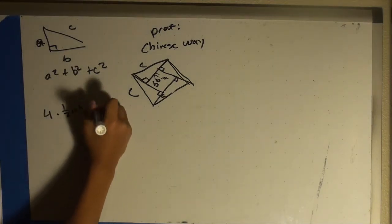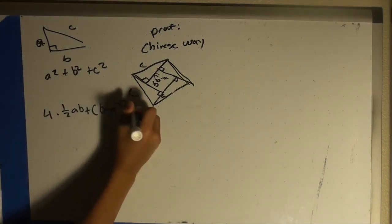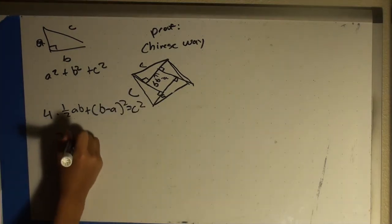So that would be four times one-half ab, plus (b minus a) squared, equals c squared.